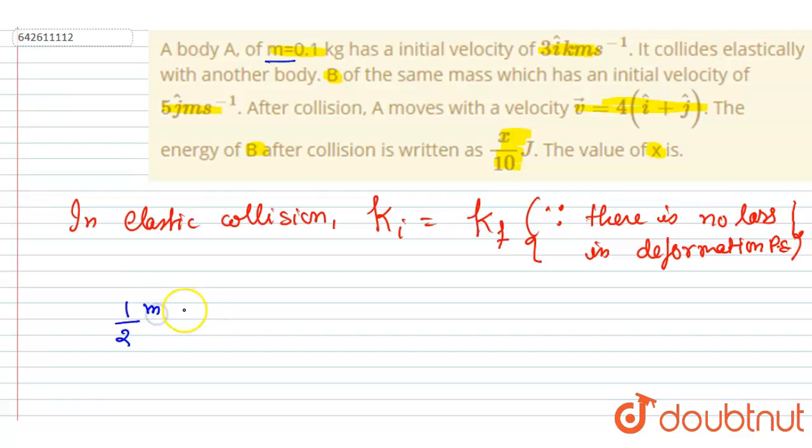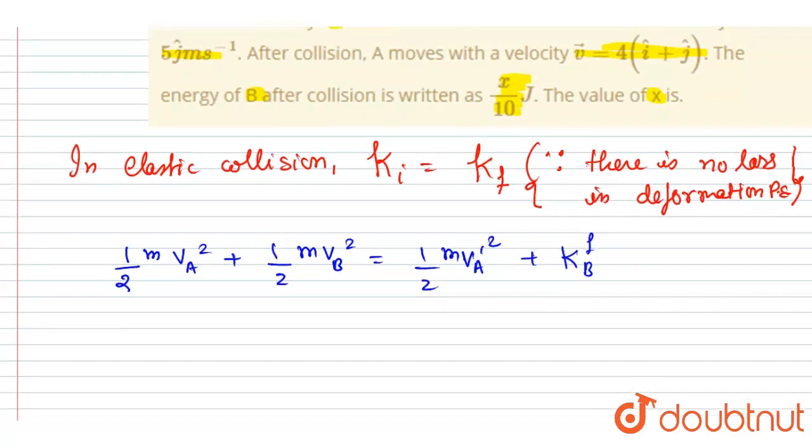So I will write half m v_A squared plus half m v_B squared equals half m v_A dash squared.